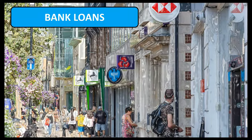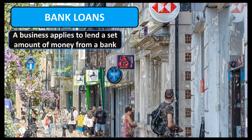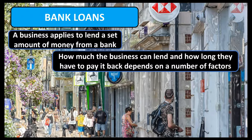Now we move on to bank loans, which are a very common source of business finance. When a business takes out a bank loan, it receives a set amount of money from the bank. However, the actual amount of money that a business can loan from the bank and the amount of time it has to repay the loan depends on a number of factors. Let's imagine you are a business and you require £10,000 to fund an upcoming project or expansion — you apply for a £10,000 bank loan. The bank will receive this application and ask questions and conduct numerous checks on the business and its owners before deciding the maximum amount they are willing to lend and how long they are willing to let the business have to repay this debt.